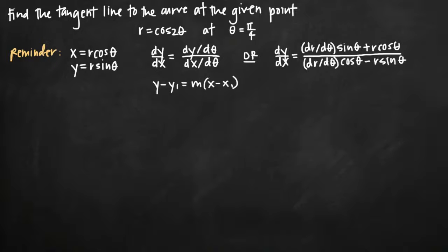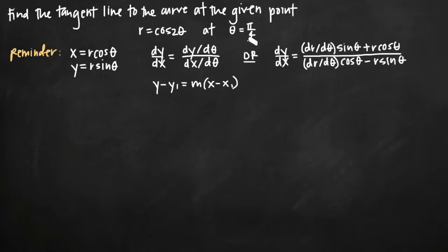Today we're going to be talking about how to find the tangent line to a polar curve at a given point. In this particular problem, we've been given the polar curve r equals cosine of 2 theta, and we've been asked to find the tangent line to that curve at the point theta equals pi over 4.